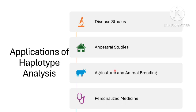Haplotype analysis also has a role in agriculture and animal breeding. Lastly, personalized medicine aims to tailor medical treatment to the individual characteristics of each patient, including their genetic makeup. Haplotype analysis can help identify genetic variants associated with an individual's risk for particular diseases, enabling healthcare providers to offer more targeted prevention or treatment strategies. It can also aid in predicting drug responses and minimizing adverse reactions.